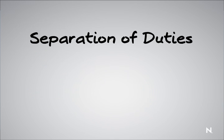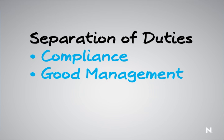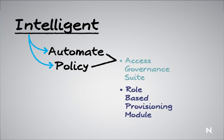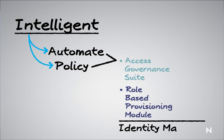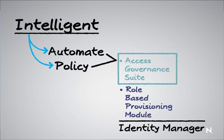So, again, separation of duties is a very important issue. It's part of compliance, and it's part of just good management as well. Novell can offer solutions to our customers using the Access Governance Suite and the Role-Based Provisioning Module on top of Identity Manager to allow them to automate this. Remember one thing we talked about in the Access Governance Suite Chalk Talks: the Access Governance Suite can be used with third-party products as well. So even if they have an existing automation or provisioning solution they've deployed and are comfortable with, you can still come in and offer them a solution to better manage their system through the Access Governance Suite.